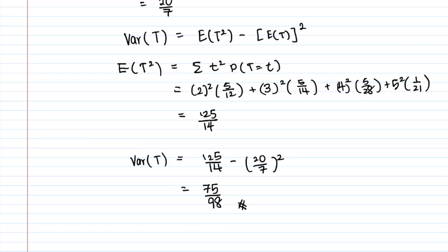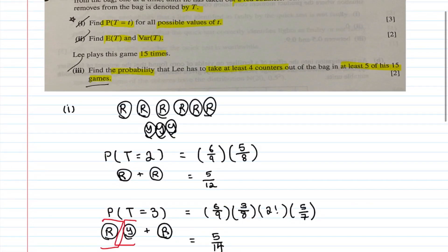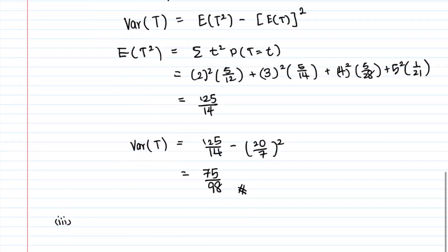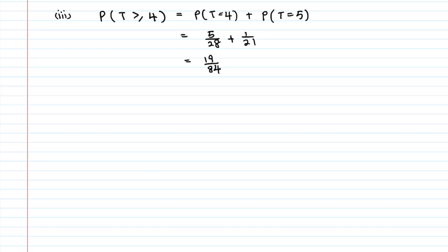So Var(T) = 75/98 and E(T) = 20/7. Now for part three: find the probability that Lee has to take at least four counters in at least five of his 15 games. P(T≥4) = P(T=4) + P(T=5) = 5/28 + 1/21 = 19/84.